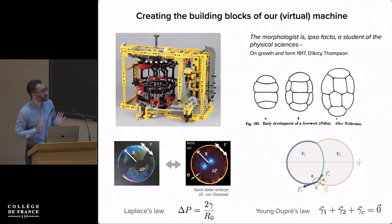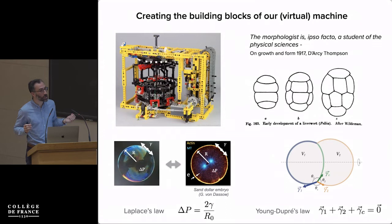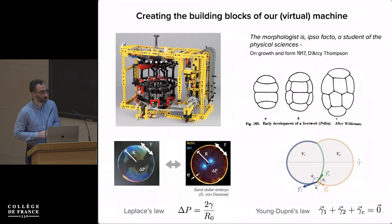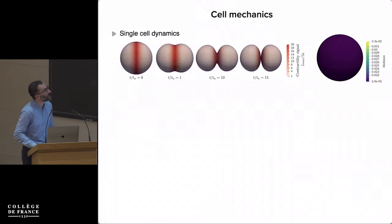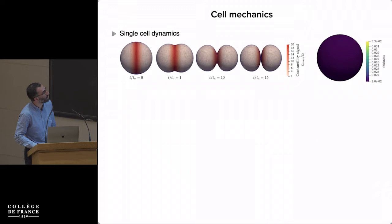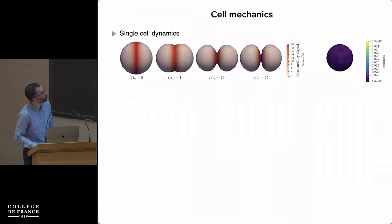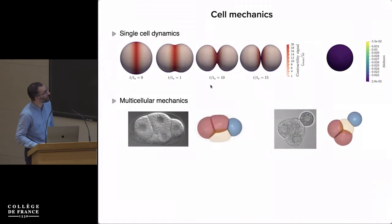D'Arcy Thompson was interested in what shapes cells, and he made analogies between embryos, tissues, and forms. There are two things to say in terms of mechanics from this analogy. First, if a cell is like a bubble it has a surface tension — an energy per unit surface that tends to minimize its surface — and the associated law is Laplace's law, relating pressure difference to tension and radius of curvature. Second, when two cells or bubbles are put together, the Young-Dupré condition requires that tensions balance at junctions. We do finite element modeling of cell deformations — for example under osmotic shock, relaxation of the actomyosin cortex, or cell division.